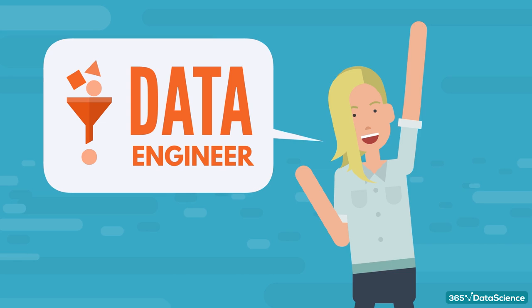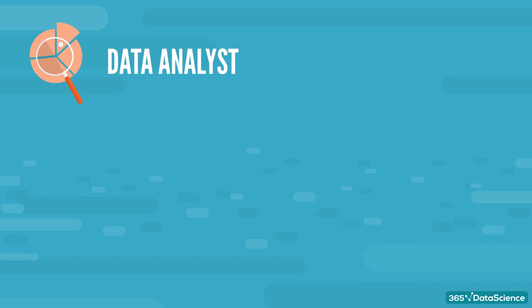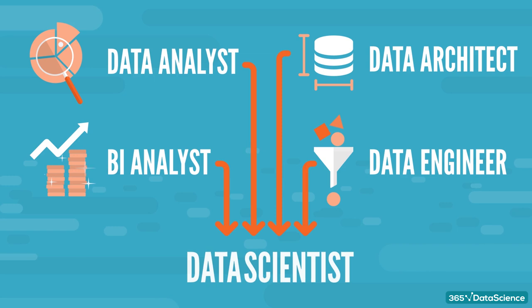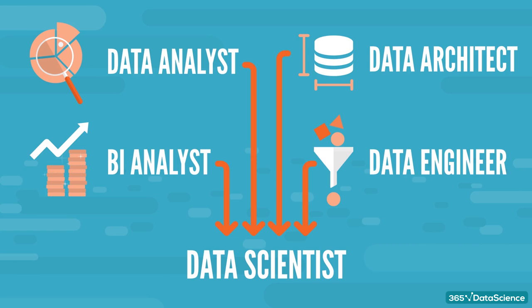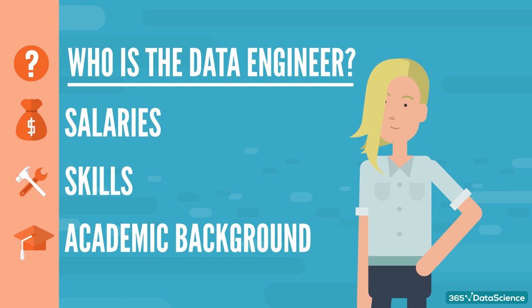Alright, let's talk about the data engineer and everything you need to know about that career path. First things first, data engineer is just one of the most coveted data science job roles out there. So keep in mind the other options too: data analyst, BI analyst, data architect, data engineer, and of course, data scientist. We'll post a video just like this one for each of these career paths. If you're interested, be sure to check them out.